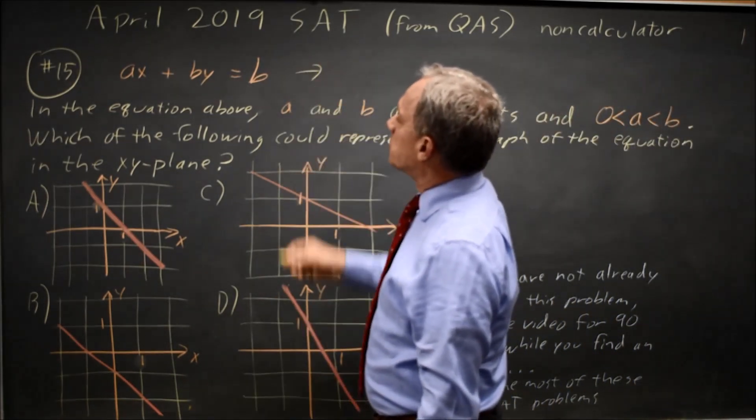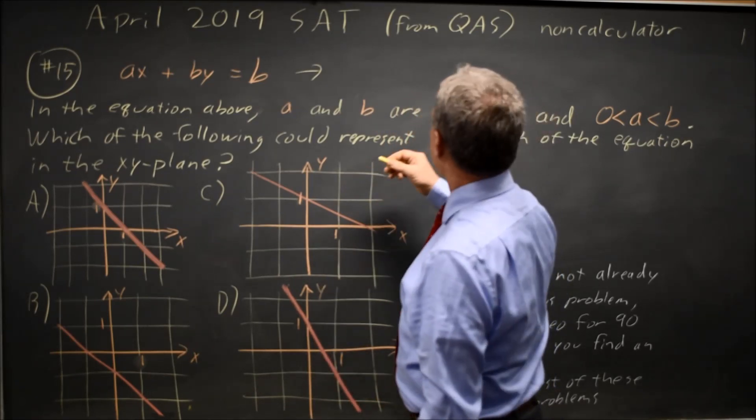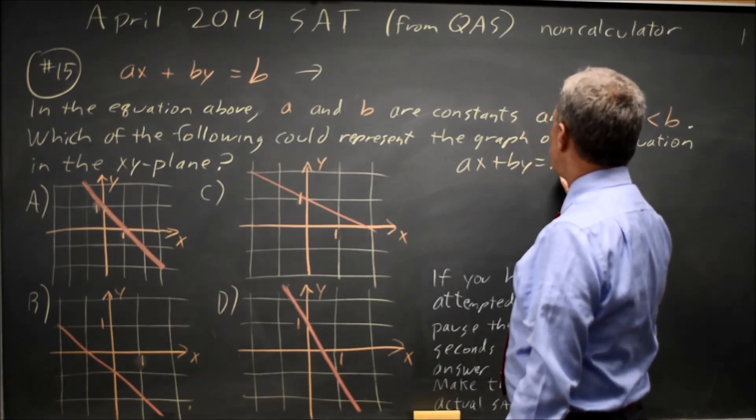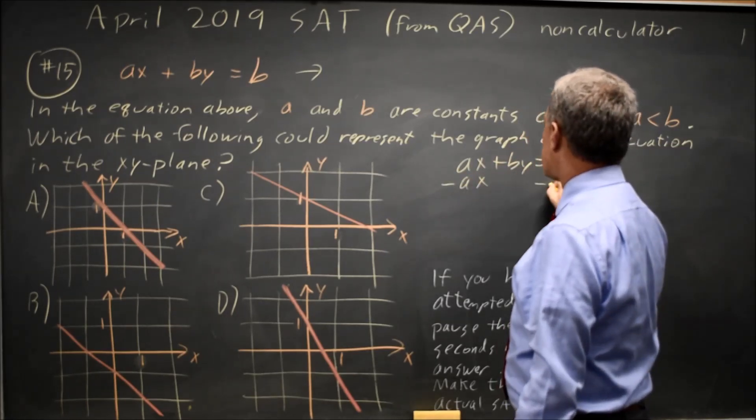To figure this out, I'm going to put this in slope-intercept form. Subtract ax from both sides. I guess I'll go over here. ax plus by equals b, subtract ax from both sides,